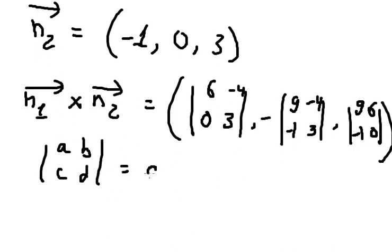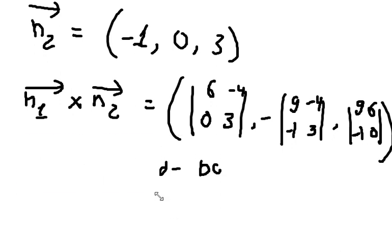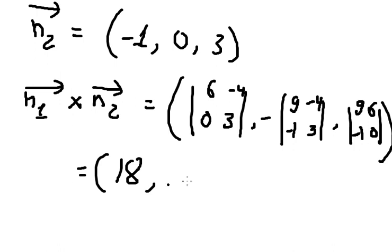We apply the formula ad minus bc. For x: 6 times 3 minus 0 times (-4) gives 18. For y: 3 minus (-1) with (-4) and the negative sign gives -23. And for z, we have positive 6. So the cross product n1 × n2 = (18, -23, 6).